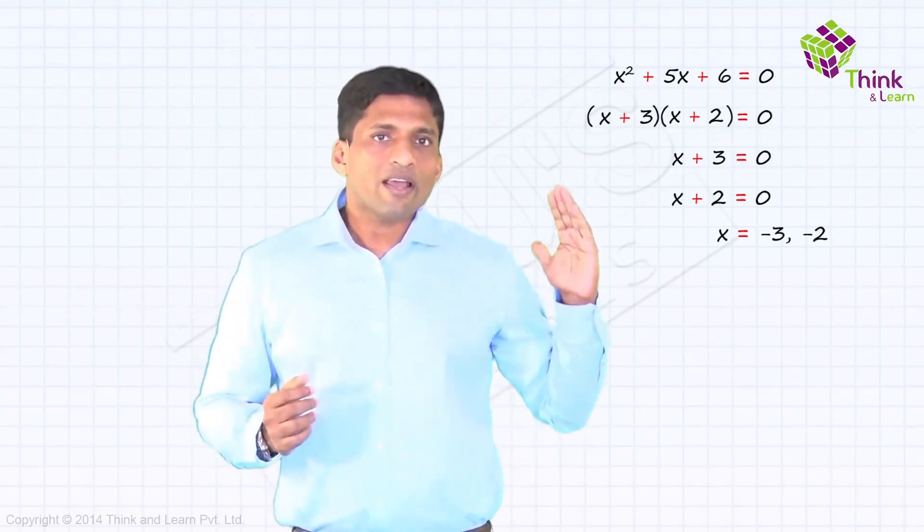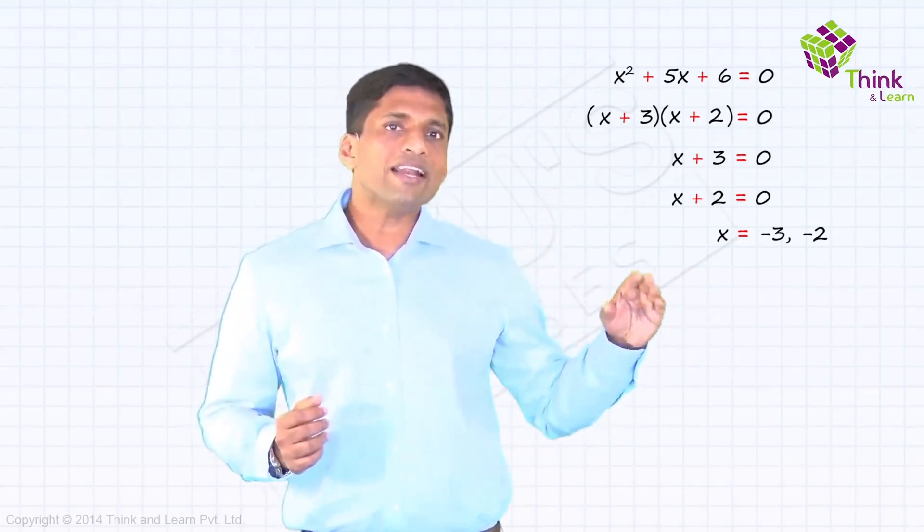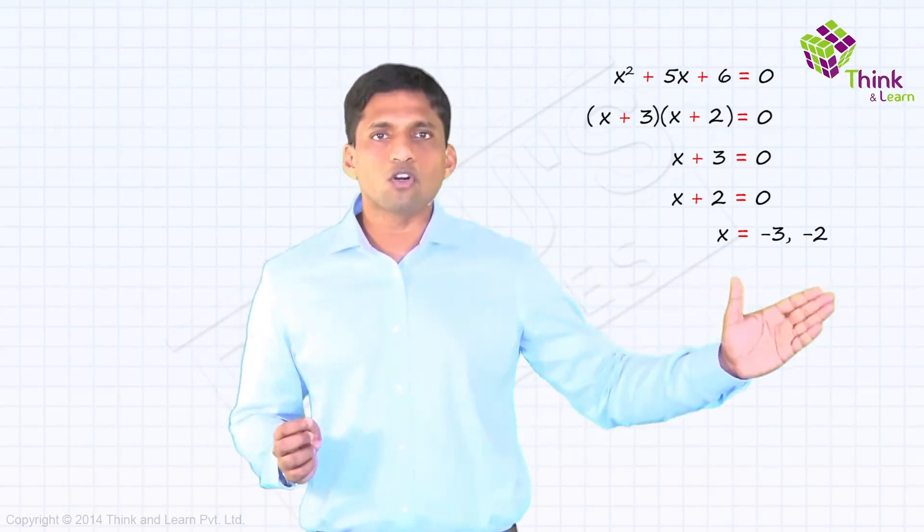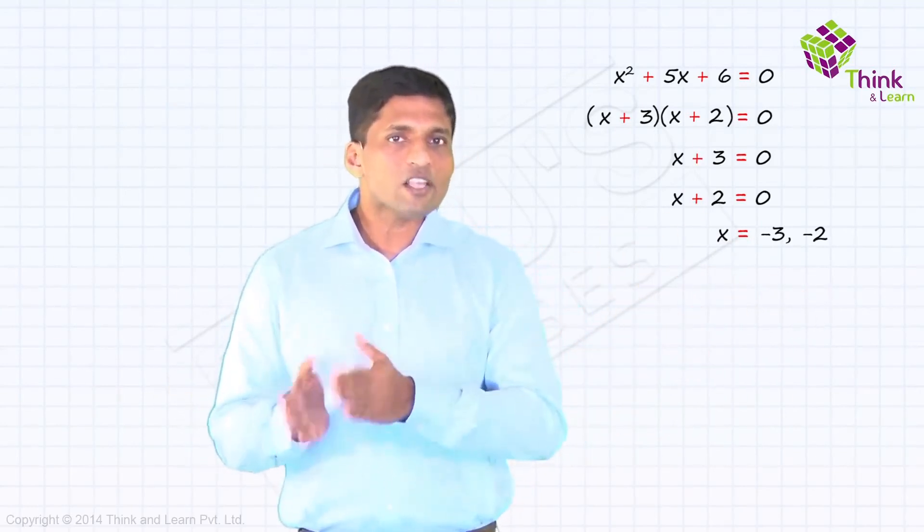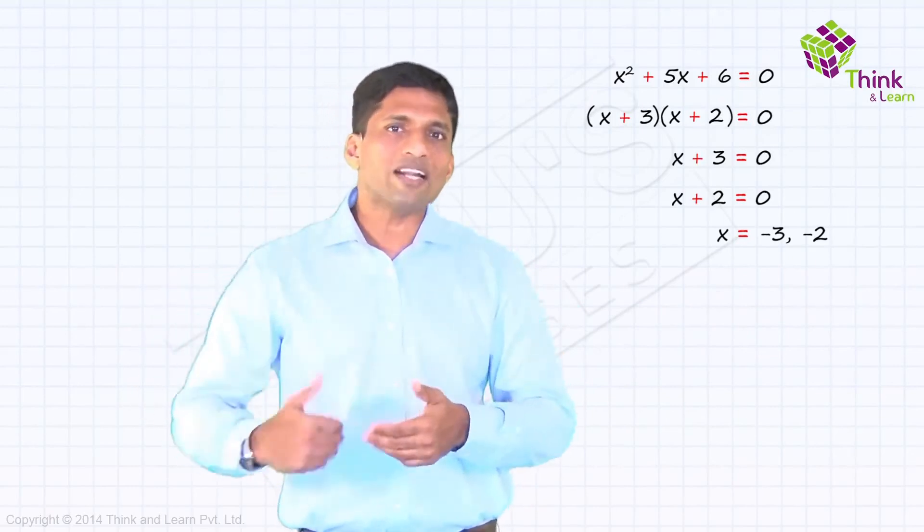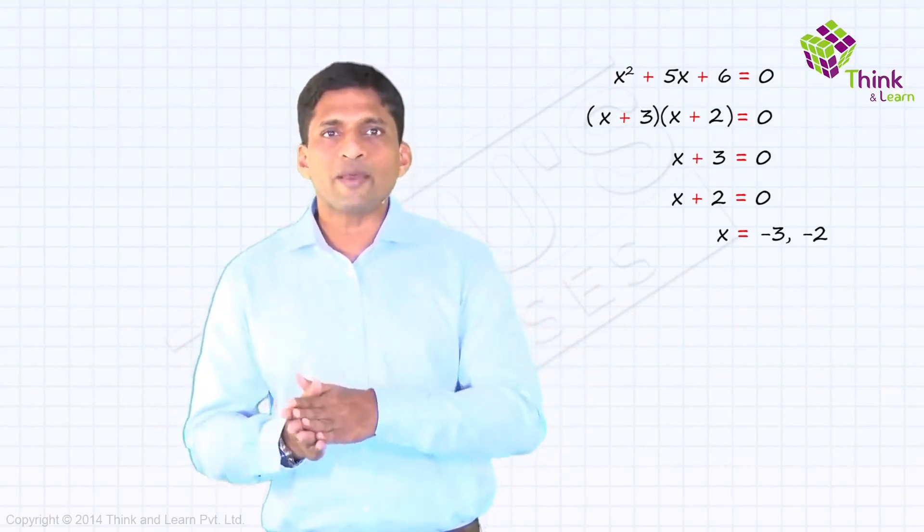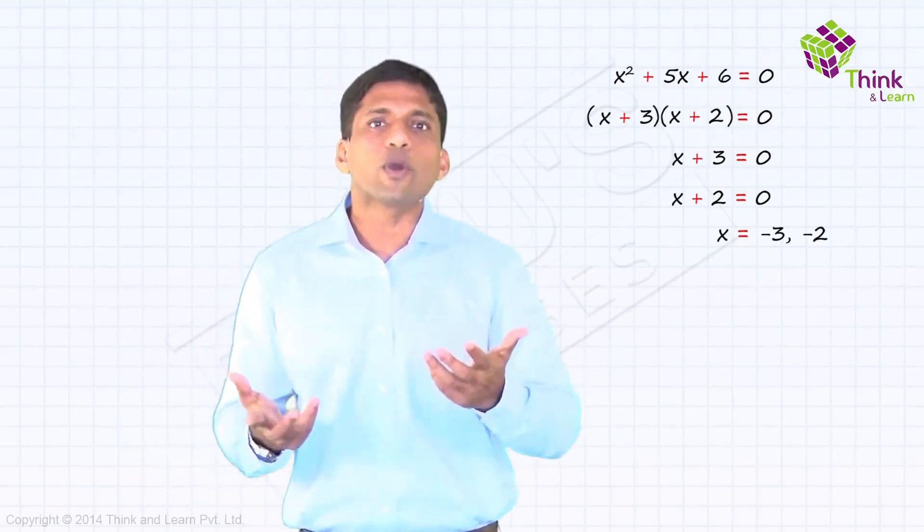That is why when x equal to minus 3 and x equal to minus 2, either when x equal to minus 3 or when x equal to minus 2, the rectangle is disappearing here because either length is becoming 0 or breadth is becoming 0. That is from being two-dimensional, you are making it one-dimensional. It's actually becoming a line. So there is no area.